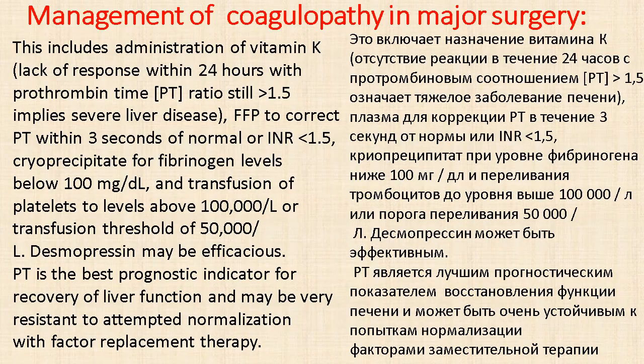Therefore, measurement of the prothrombin time is the simplest best test. This includes administration of vitamin K, assessing the lack of response, and assessing the prognosis of acute liver disease. A prothrombin time greater than 1.5 implies severe liver disease. FFP is used to correct PT within 3 seconds to normal, or INR less than 1.5.